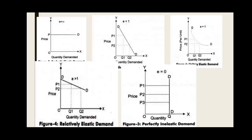These five types of price elasticity of demand can also be understood through graphs. As you can see on the screen, there are 5 graphs. The first graph shows Ep equal to infinite — perfectly elastic demand. The second graph shows Ep less than 1 — relatively inelastic demand. The third graph shows Ep equal to 1 — unitary elastic demand. The fourth graph shows Ep greater than 1 — relatively elastic demand. The fifth graph shows perfectly inelastic demand where Ep equals 0.